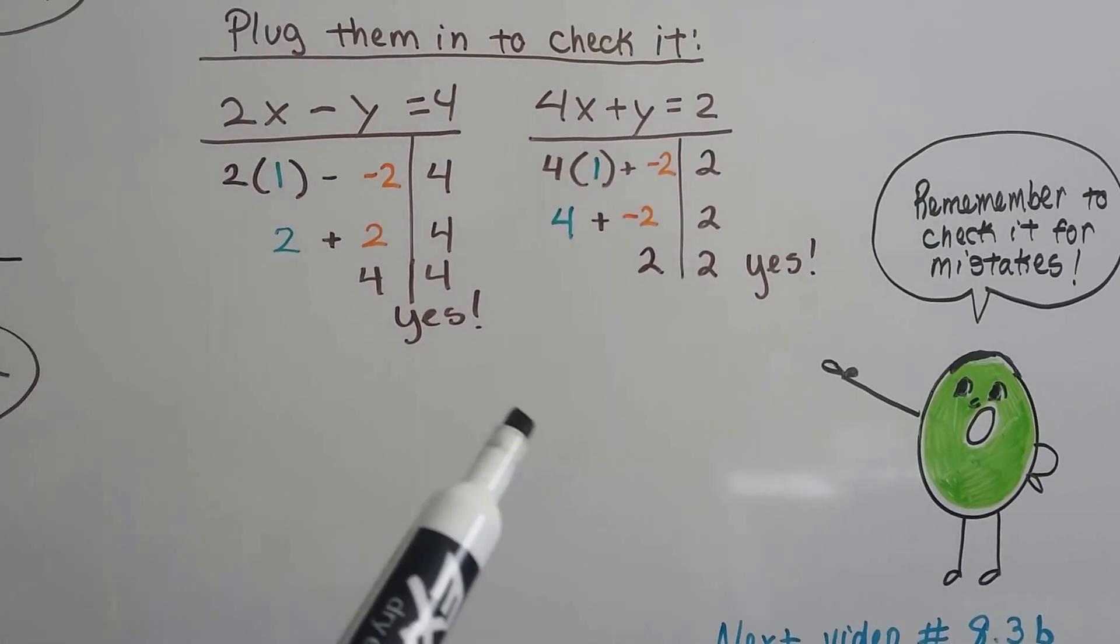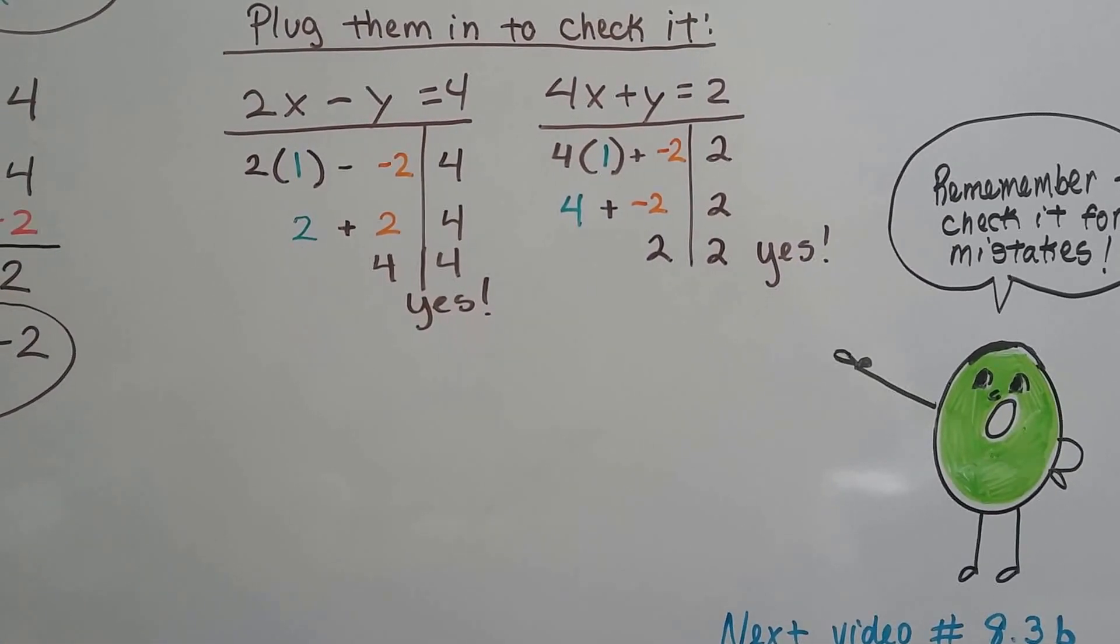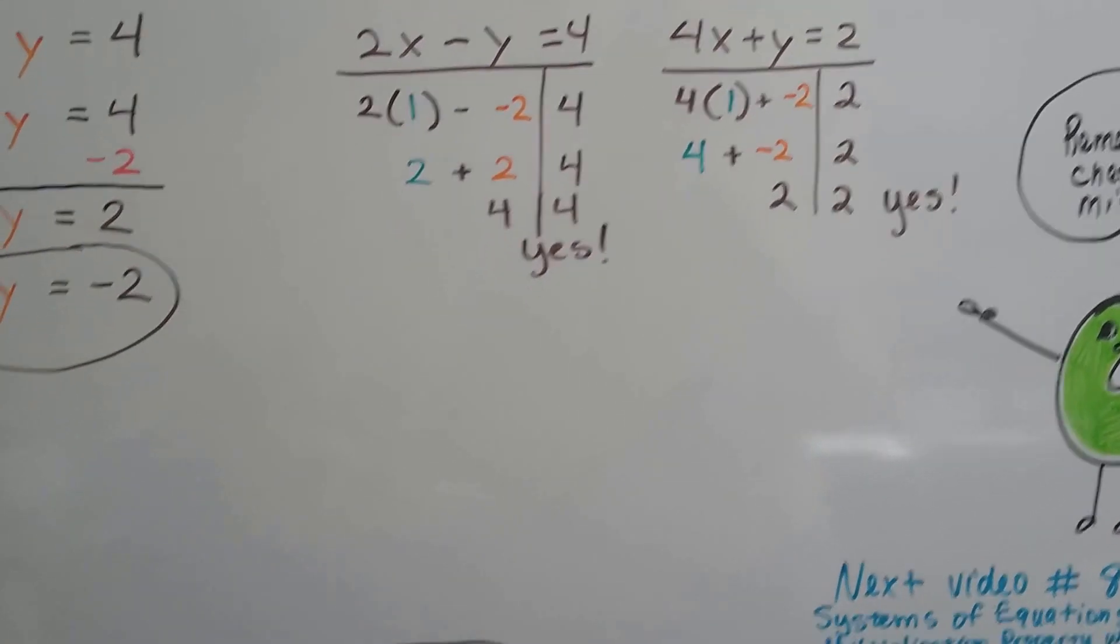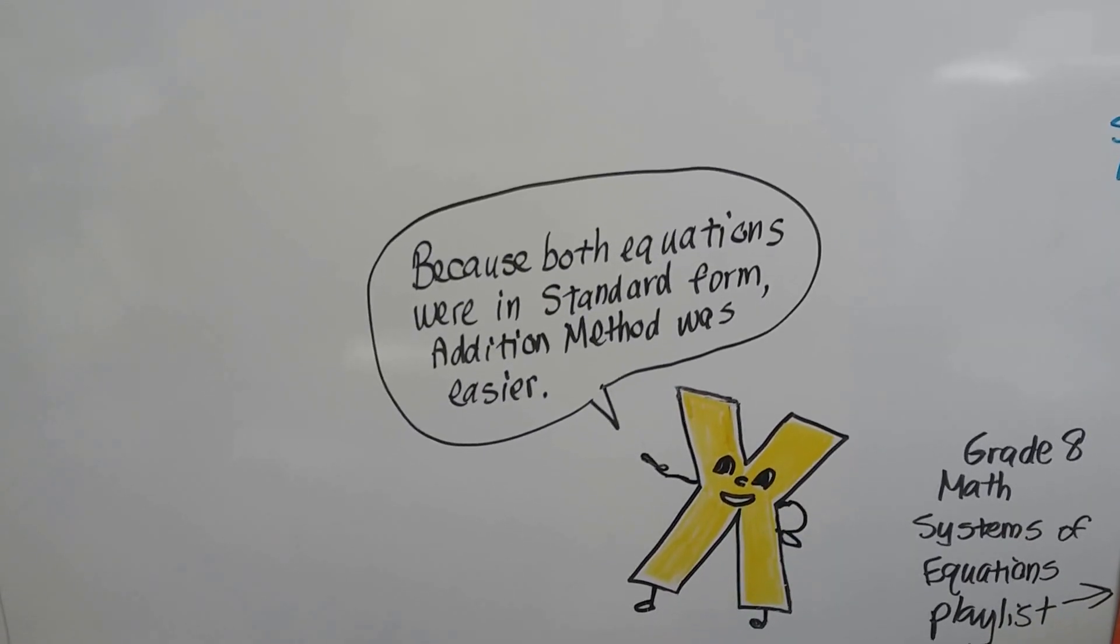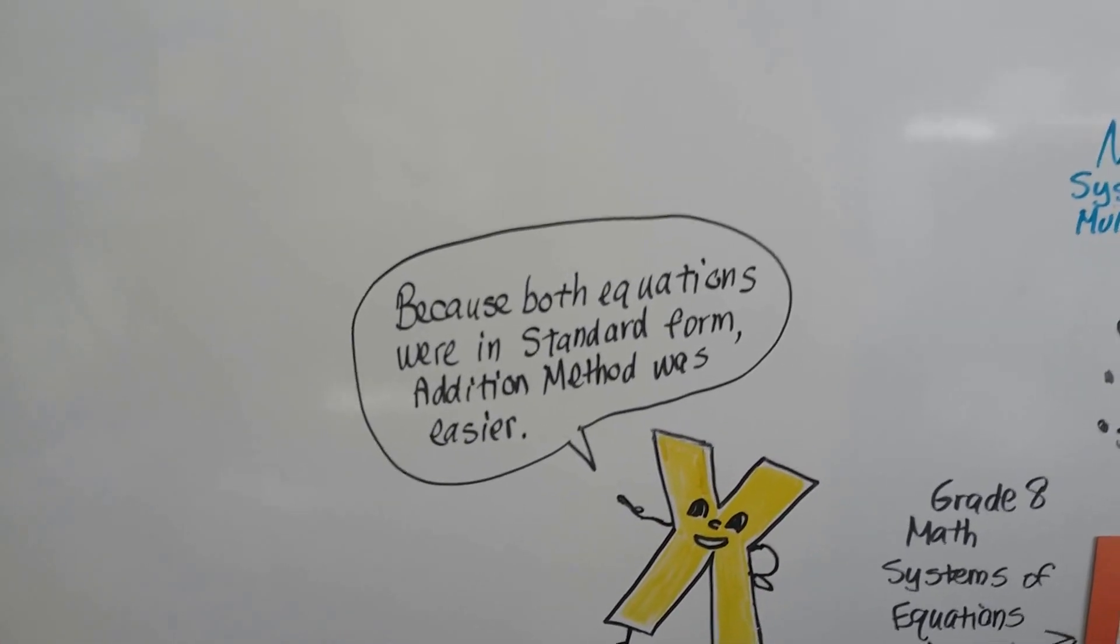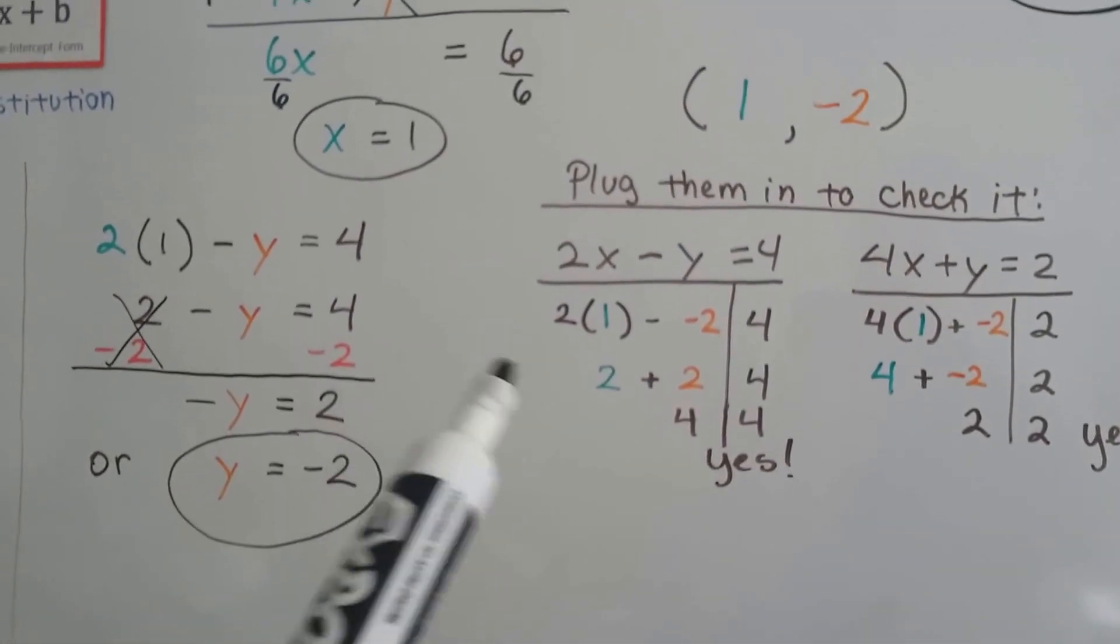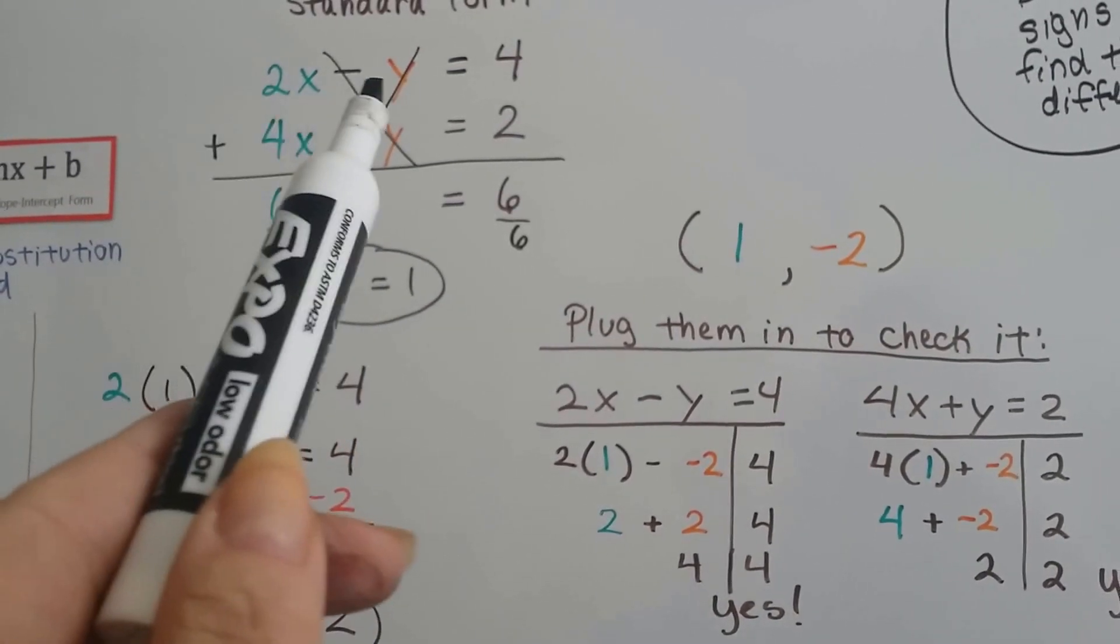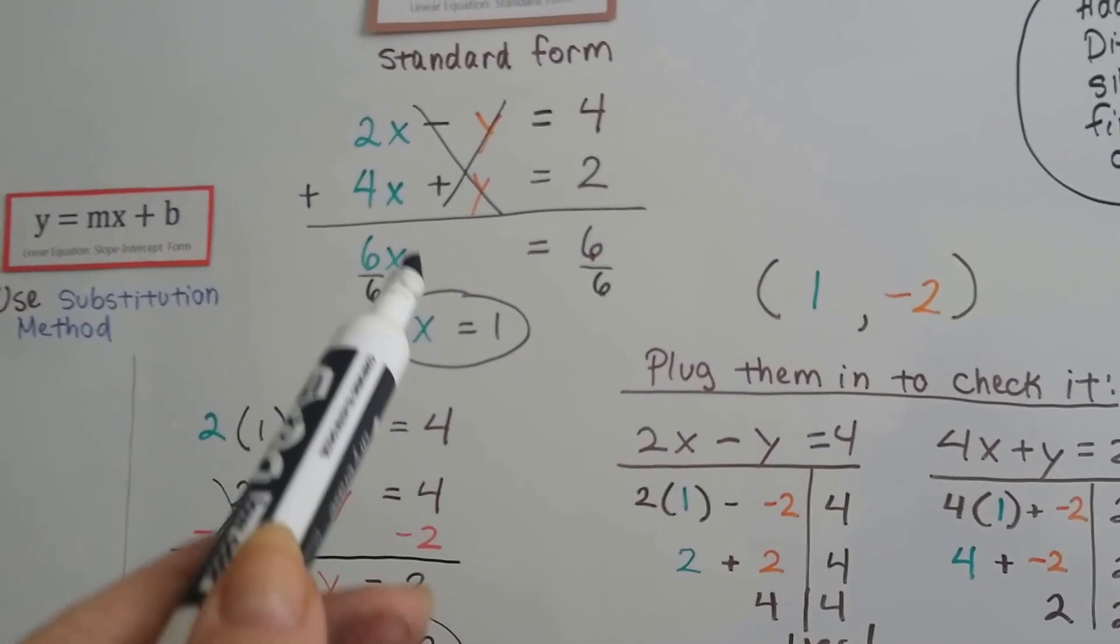Because you don't want to accidentally make a mistake, and if you're taking a test and it tricks you and has the mistake as one of the possible answers. So go over it really quick, check it, make sure you did okay. Because both of these equations were in standard form, the addition method was easier than using the substitution method. Even though we did substitute the numbers in to check it, it's not necessarily the substitution method. We didn't use one value for the other. We couldn't because it was in standard form.